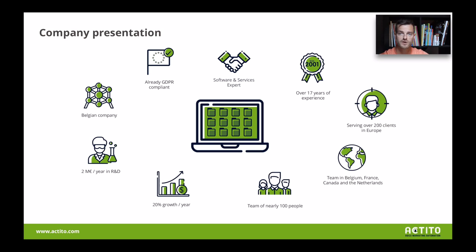Very quickly about our company: Actito is a company based in Belgium, founded by three guys in 2001 — directly jumping into SaaS, which makes us quite unique today. We are really focused on providing the best marketing automation technology to marketers. Sorry for the IT guys, we still have APIs for you. We have more than 200, nearly 250 clients today, with a presence in Belgium with our HQ, the Netherlands, Paris, and also Quebec, which makes us an international company.